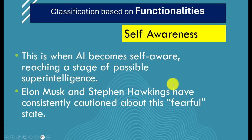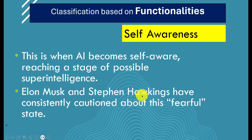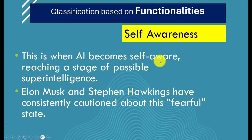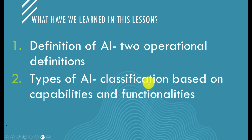The final functionality type is Self-Awareness AI — and this is the tough one. Elon Musk and Stephen Hawking have warned about this and cautioned throughout 2023. We are not there yet. These are still hypothetical postulates beyond Weak AI. If AI becomes self-aware, it could reach a stage of possible super intelligence — which is why these warnings have been issued.